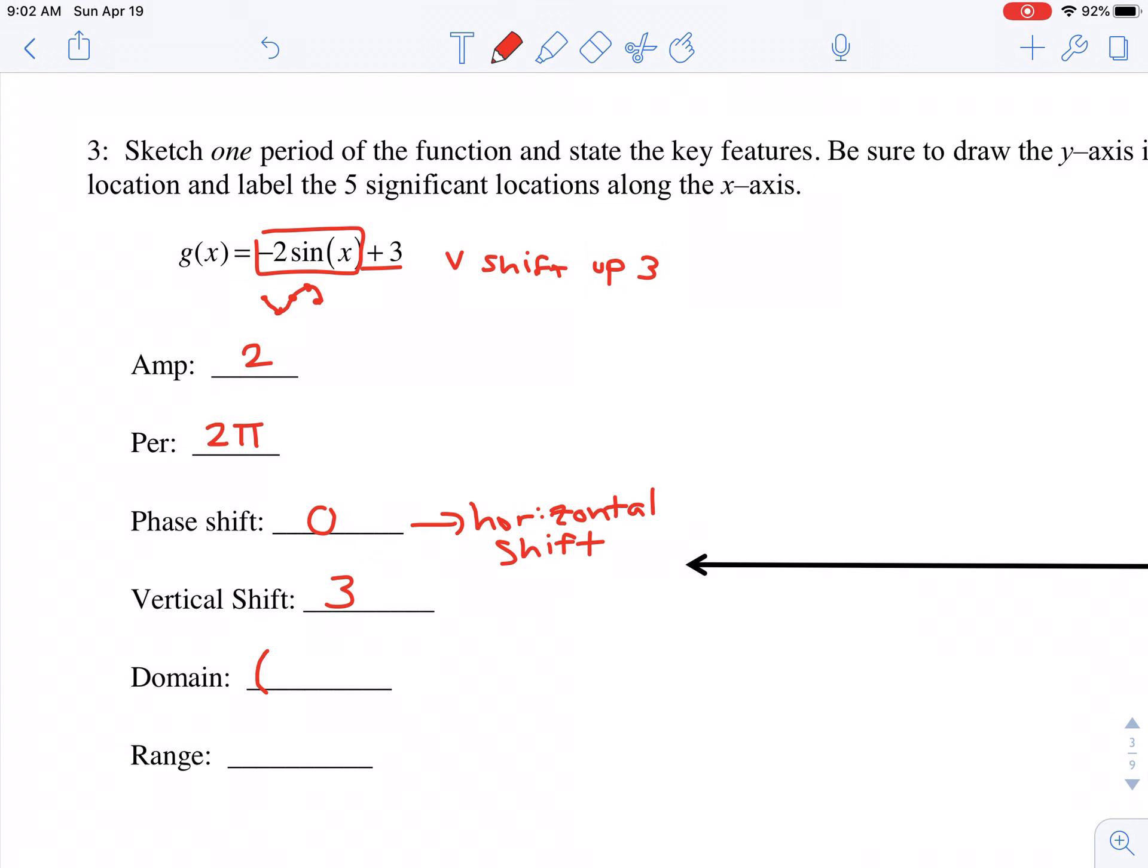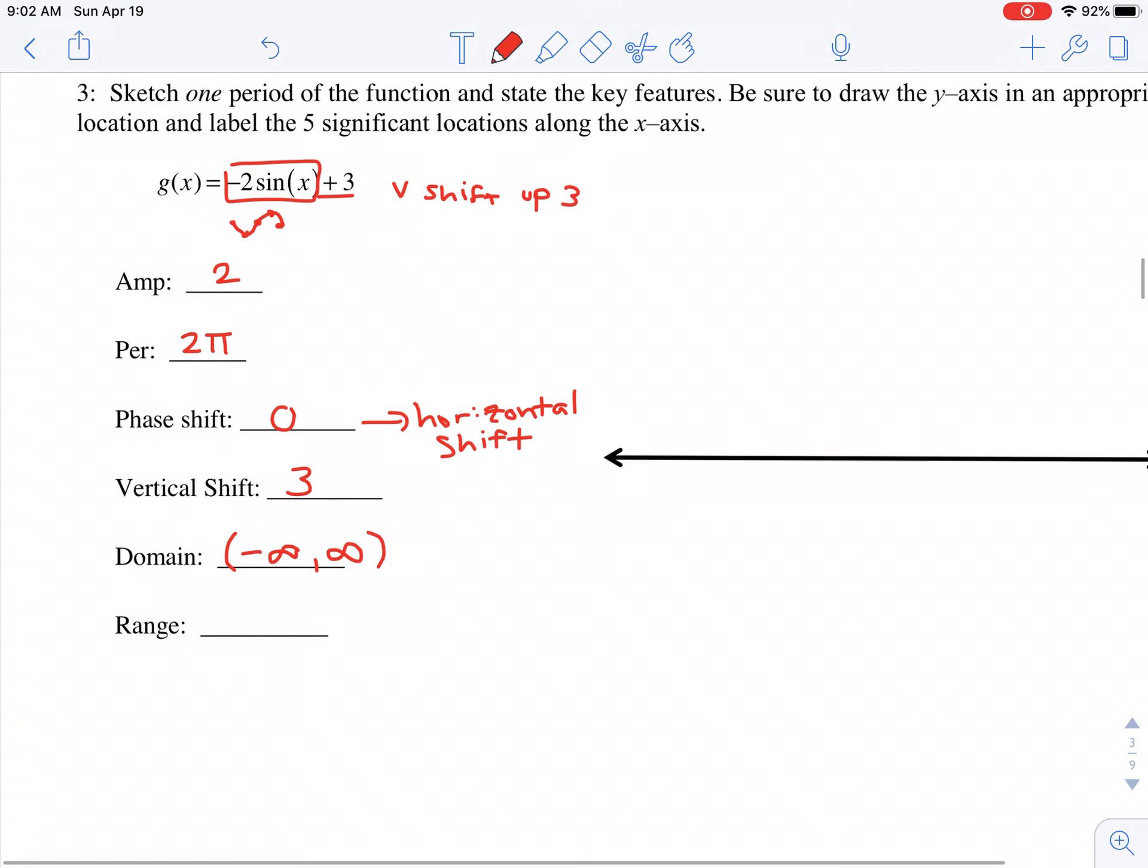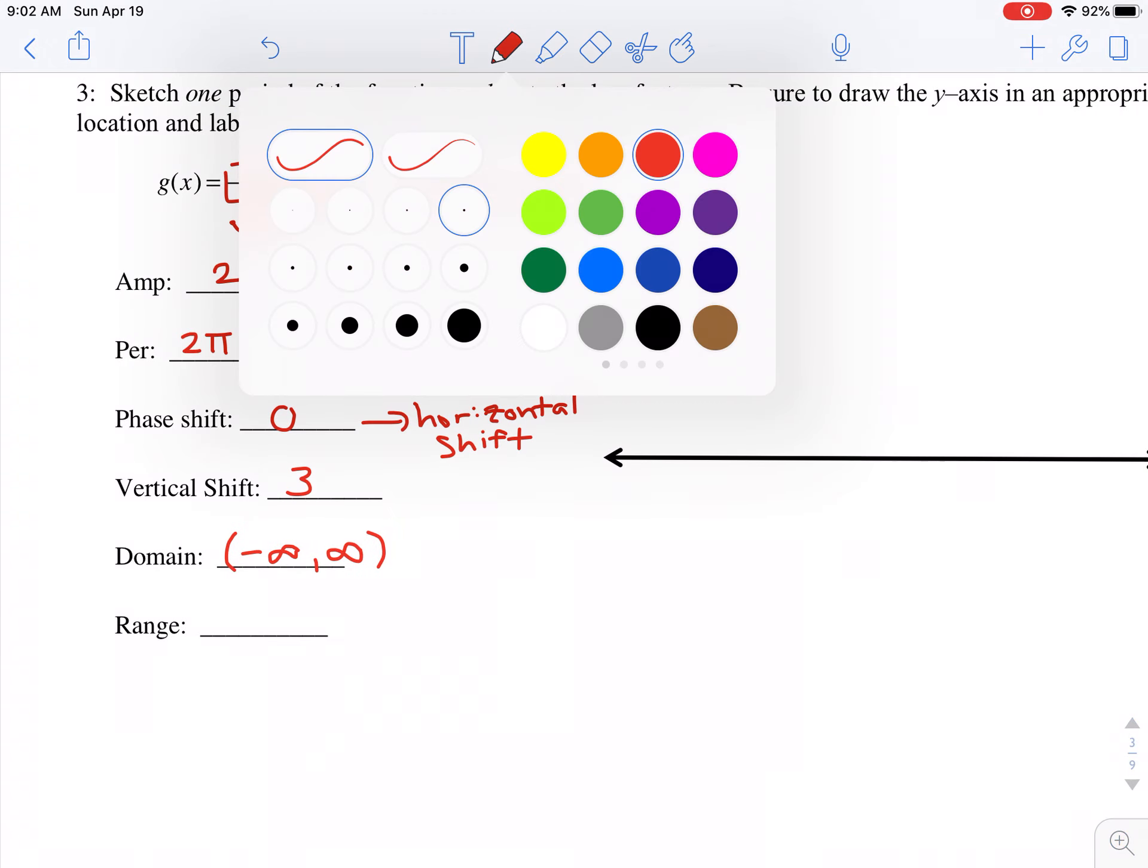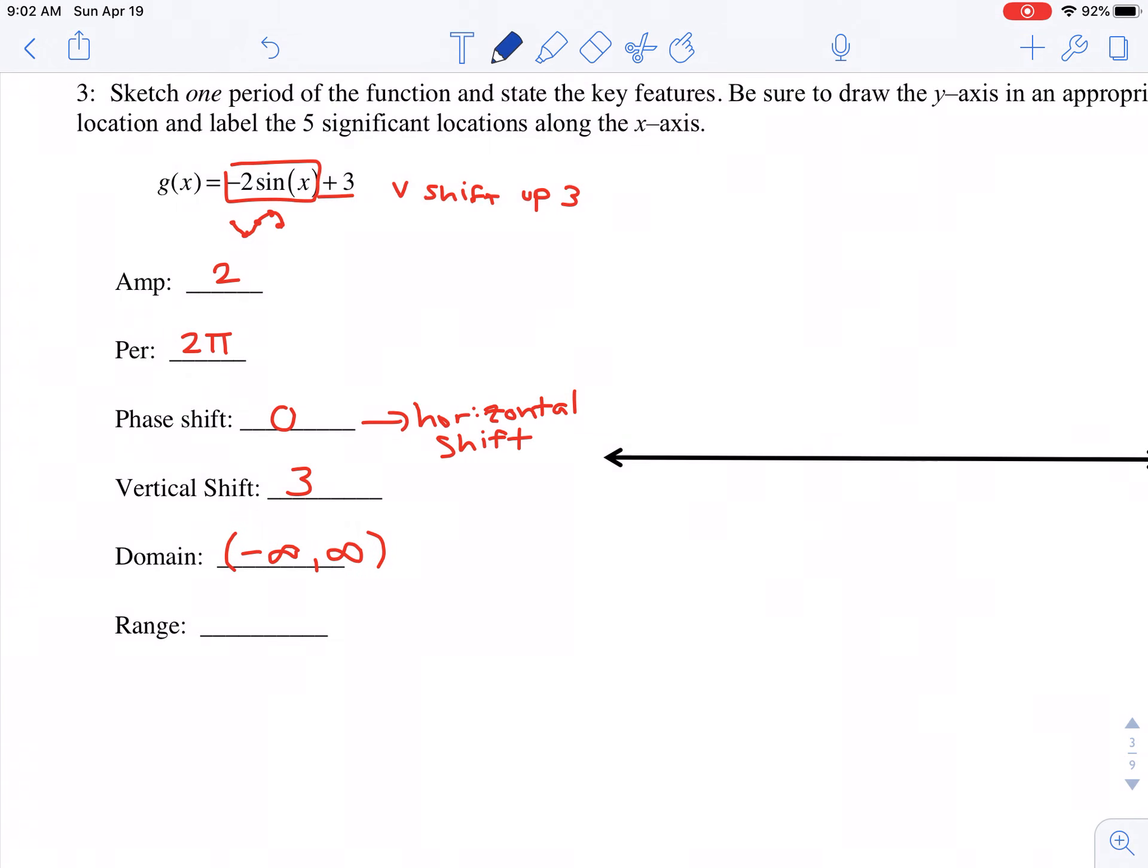We continue to have a domain of negative infinity to infinity, but because of that vertical shift up three, our range is going to change a little bit. So before we had it at zero, we were going up to two, down to negative two. Well now if that whole thing is shifted up, right, we're going to shift that whole thing up three, well now my midline is going to be at three instead of that zero, right?